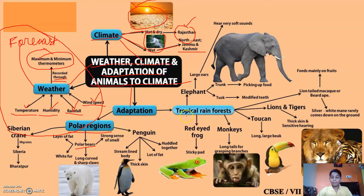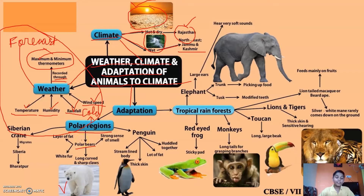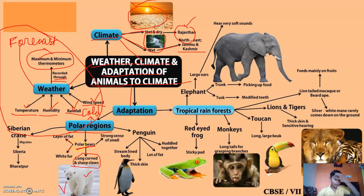Adaptation is of two types: polar region and tropical rainforest. In the polar region it is very cold. Polar bears live there. The polar bear has a layer of fat and white fur, as you can see in the picture, and also long, curved and sharp claws.